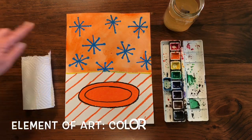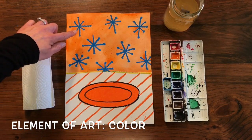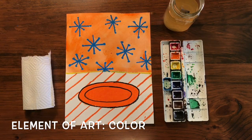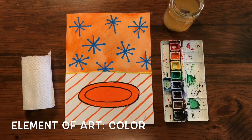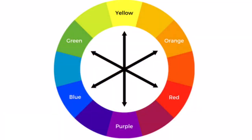Or you might want to use complementary colors, as I did here with blue and orange. Blue and orange are complementary colors. Complementary colors are opposite each other on the color wheel and consist of one primary color and one secondary color. They really make an image pop and stand out when used next to one another in artwork. Other complementary colors are red and green, or purple and yellow.